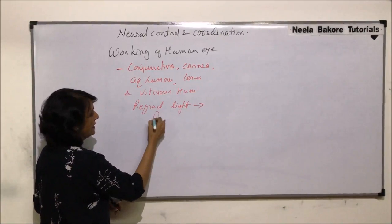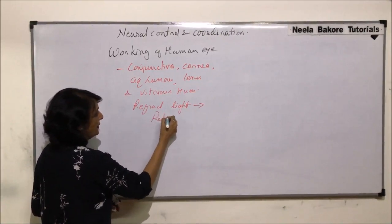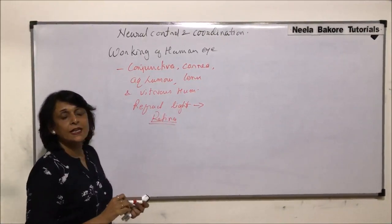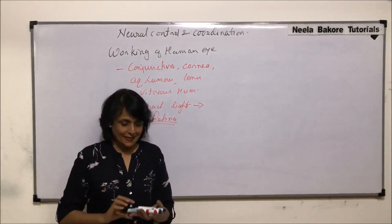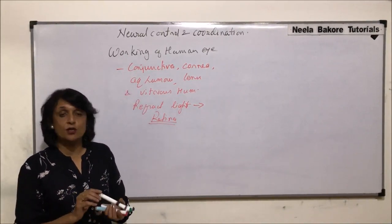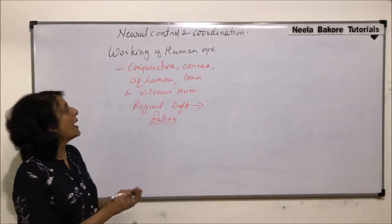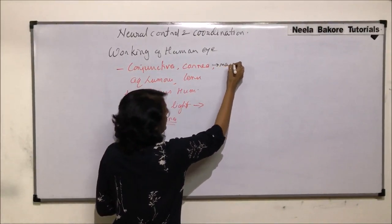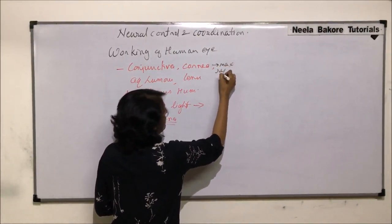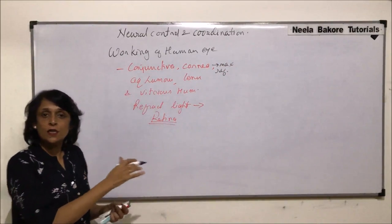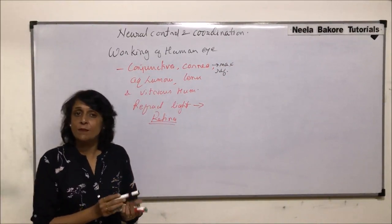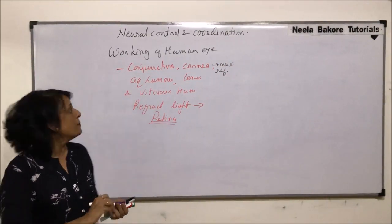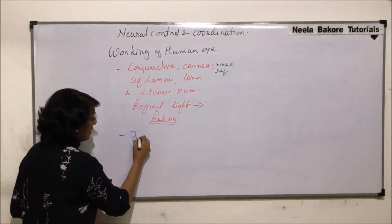All this light is focused on the retina. Maximum refraction is done by the cornea, so the cornea is responsible for maximum refraction. All others also help, but the cornea plays the major role. There is one more important structure — the pupil — which acts as a diaphragm and regulates how much light enters the eye to fall on the retina.